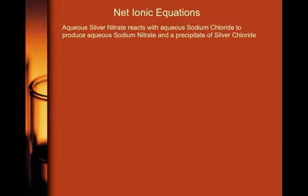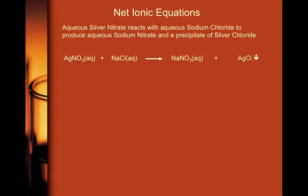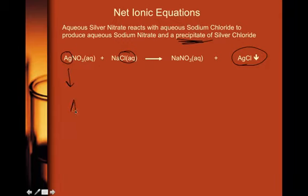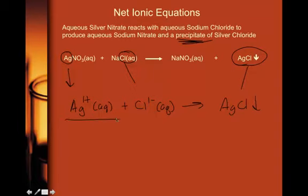Another example: aqueous silver nitrate reacts with aqueous sodium chloride to produce aqueous sodium nitrate and a precipitate of silver chloride. If asked to write the net ionic equation, the only thing that matters is the precipitate. Take the precipitate AgCl (s), put it on the right side, and break it into its ions on the left: Ag⁺ (aq) plus Cl⁻ (aq) → AgCl (s). That's your net ionic equation.